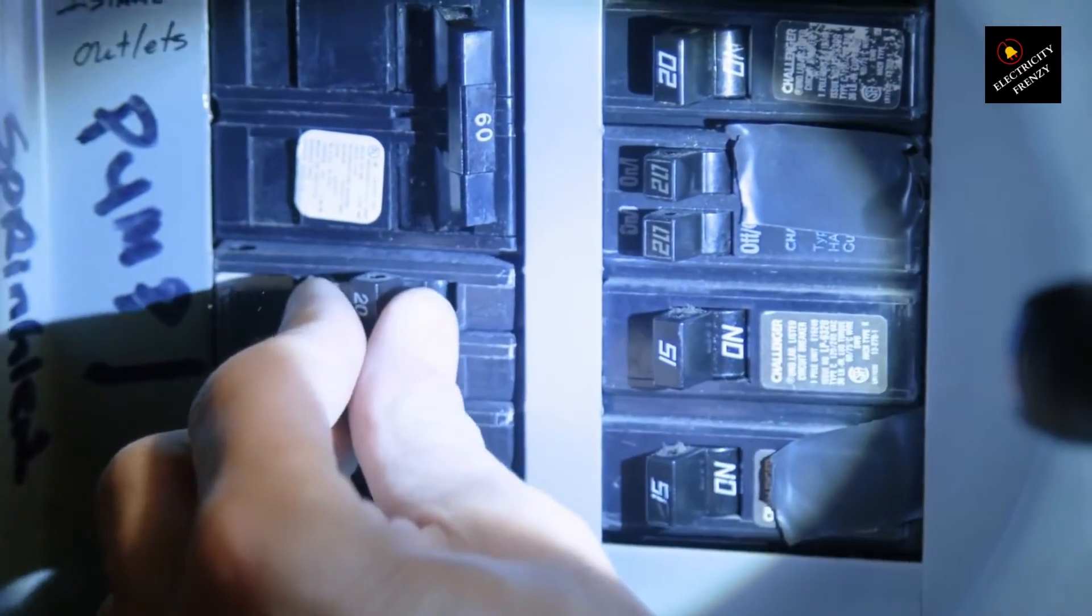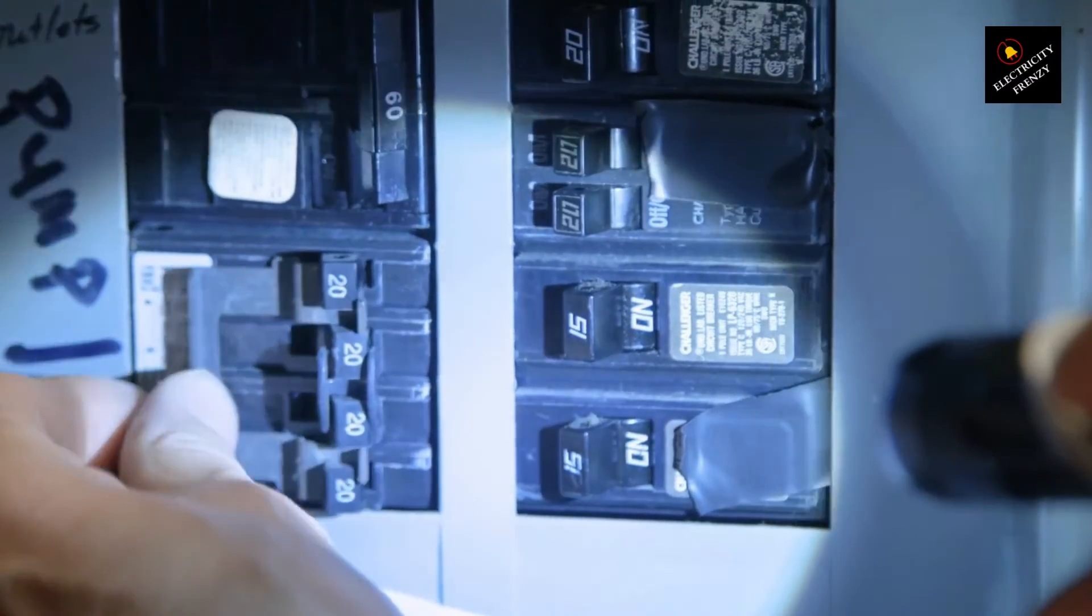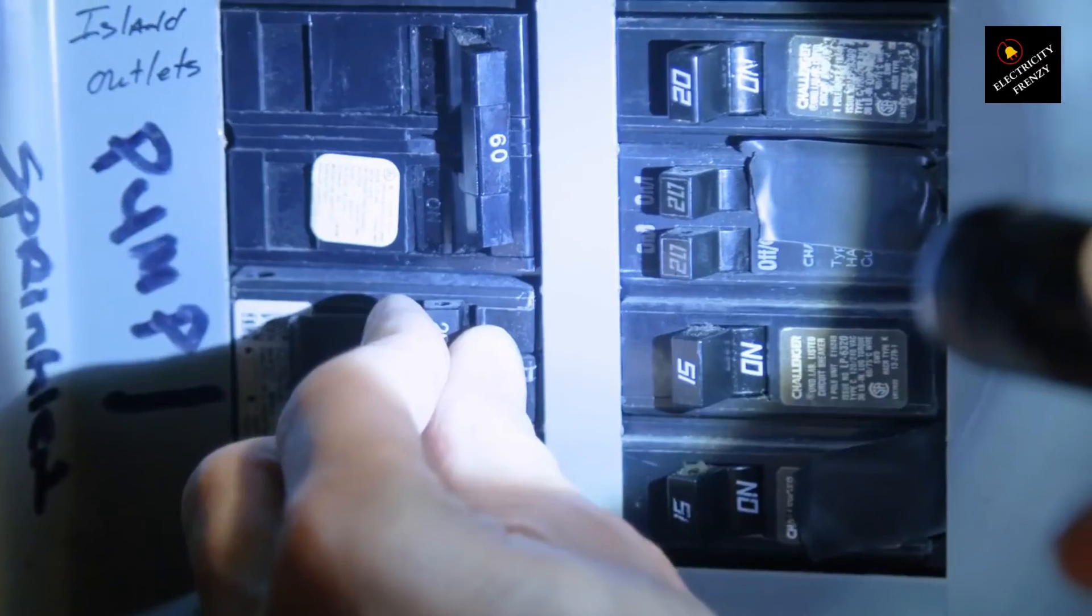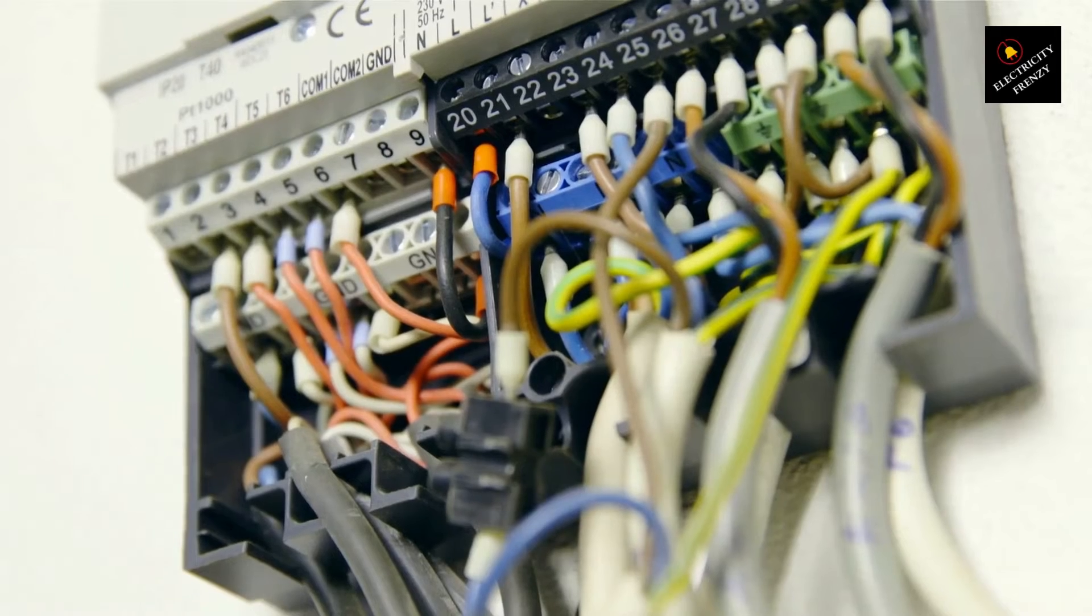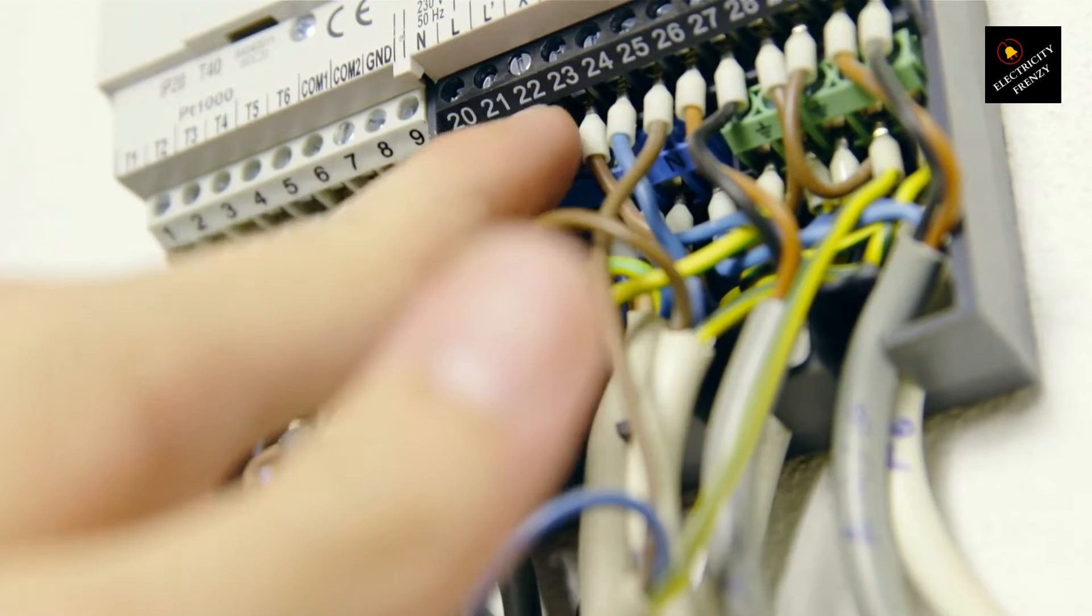Inspect the wiring connections in the circuit, ensuring they are tight and secure. Additionally, have a qualified electrician examine the wiring to check for any signs of damage or improper installation. They can verify if the wiring size and type are appropriate for the dryer's electrical requirements.